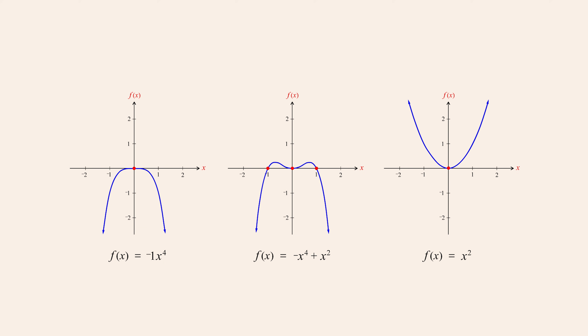This is because there are three different x-values where the sum of the two monomial functions is zero. For example, when x is zero, both functions have a value of zero, so their sum also has a value of zero. Likewise, for the two monomial functions, when x is one or negative one, the sum of the two functions is also zero, producing two additional zeros for the polynomial function.